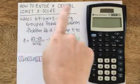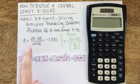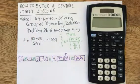So now I'd like to show you how to enter a central limit z-score, where specifically there is a numerator and a denominator that have more than a single term.